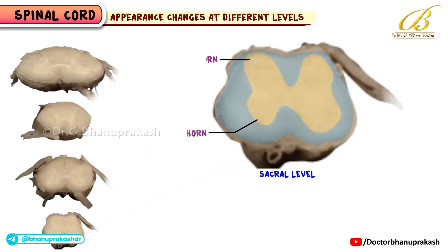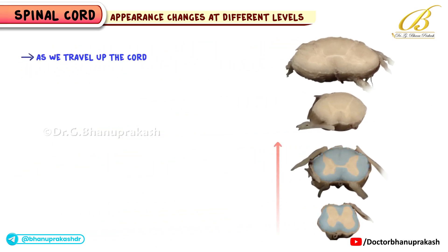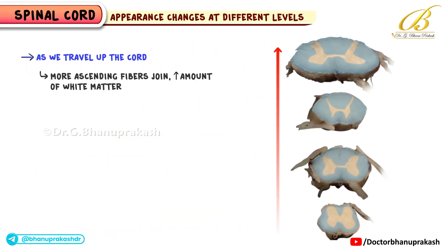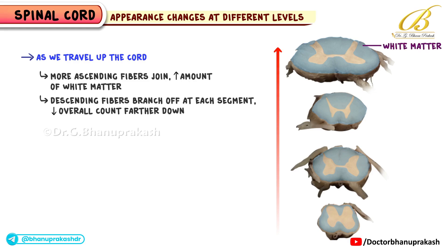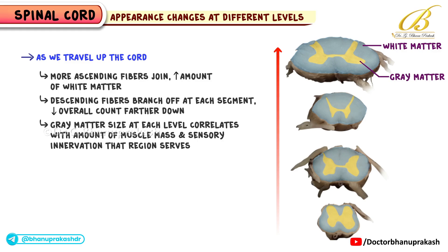At the lumbar level, the cord is more circular with bulky gray matter, especially in the anterior and posterior horns that supply the lower limbs. At the sacral level, there is the least white matter but more prominent, rounded anterior and posterior horns. As we travel up the cord, more ascending fibers join, increasing the amount of white matter, while descending fibers branch off at each segment. Meanwhile, gray matter size at each level correlates with the muscle mass and sensory innervation that region serves, hence the enlargements in the cervical and lumbar areas.